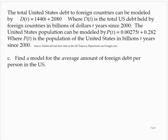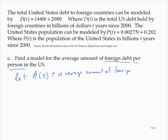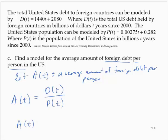Find a model for the average amount of foreign debt per person in the United States. Let A of T represent this average amount of foreign debt per person. Then A of T would be the debt D of T divided by the population P of T, which can be represented as 1,440T plus 2,080 over 0.00275T plus 0.282.